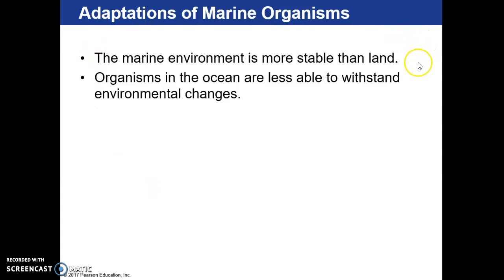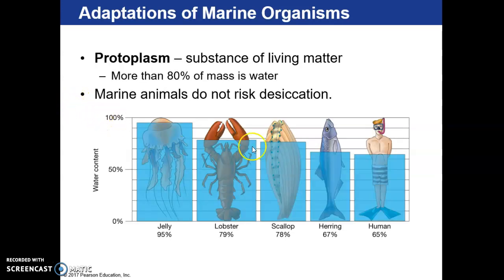Because of this stability, we talked about there being less speciation in the ocean. The flip side of that is that organisms in the marine environment are less able to withstand environmental changes — they're very specifically adapted to live in those spaces. One key concept is protoplasm, which makes up the substance of living matter.